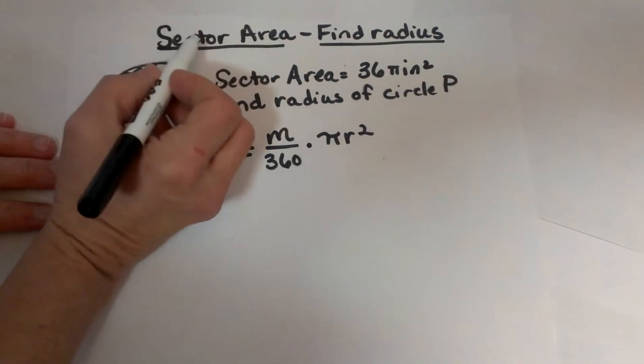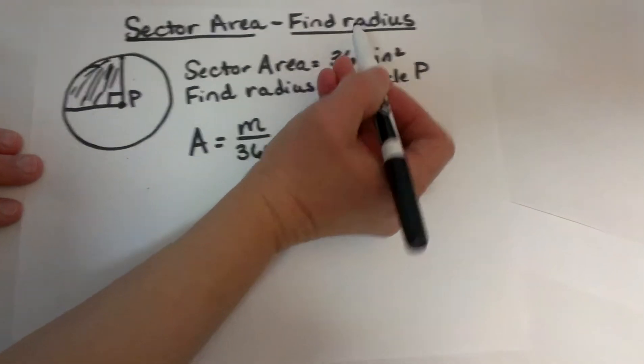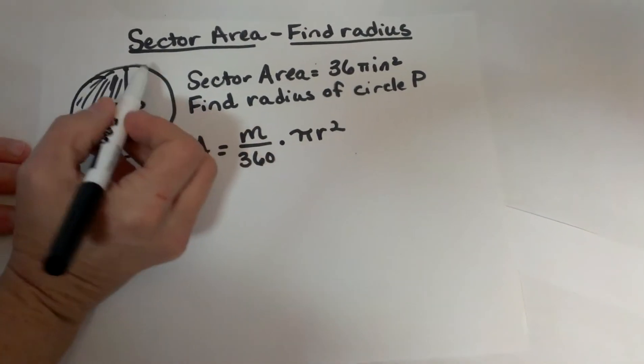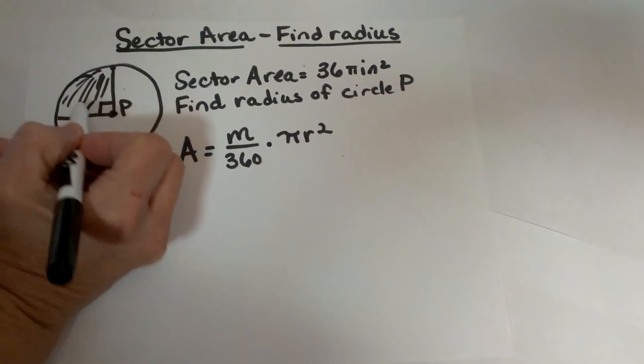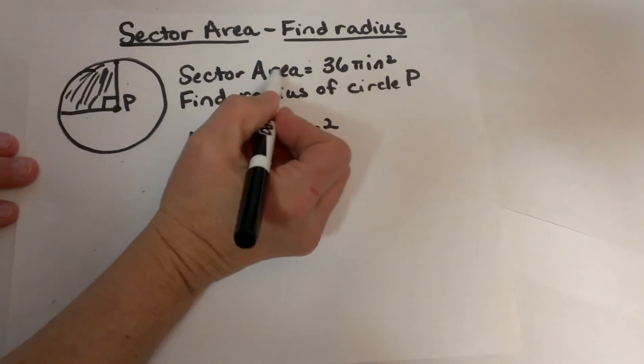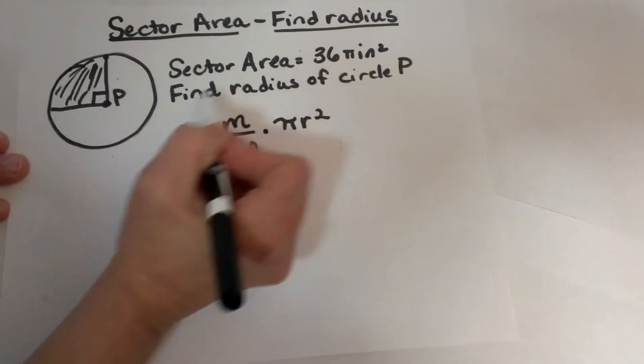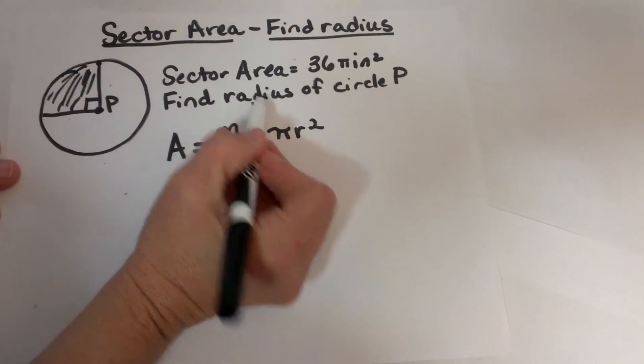We are going to take the sector area that is given and find the radius. In our circle we have a section sectioned off that has a 90 degree angle, and we know the sector area or this portion of the circle has an area of 36π. We need to work backwards to find the radius of the circle.